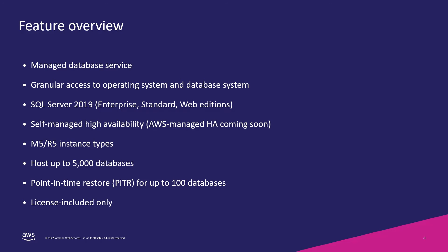Here are some of the RDS Custom features at a high level. RDS Custom is a managed database service that at the time of this recording supports SQL Server 2019 in the Enterprise, Standard, and Web Editions. If you need high availability, you can set up HA using Always-On Availability Groups, with AWS-managed HA coming soon. Currently, RDS Custom is available on M5 and R5 instance types only. It can host up to 5,000 databases and provides point-in-time recovery for up to 100 databases — a big jump compared to RDS which supports 100. Like Amazon RDS, RDS Custom for SQL Server is a license-included service.